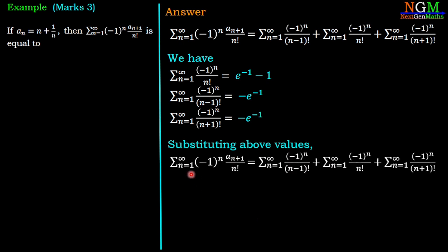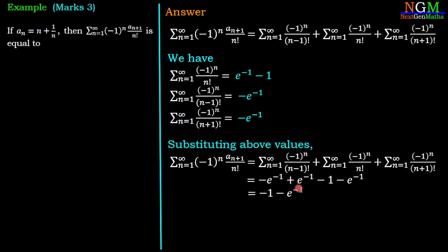The required summation Σ (n=1 to ∞) (-1)^n · A_{n+1}/n! is the sum of these three values: -e^{-1} + (e^{-1} - 1) + (-e^{-1}). The first two terms cancel partially and we get -1 - e^{-1}, which simplifies to -(1 + 1/e) = -(e+1)/e. So this sum has value -(e+1)/e.